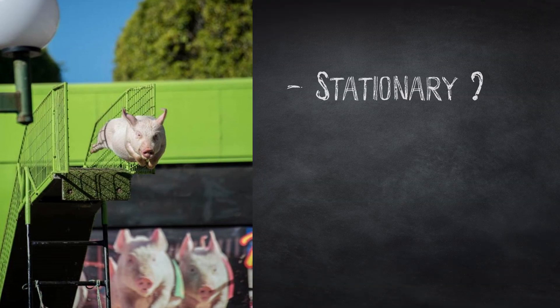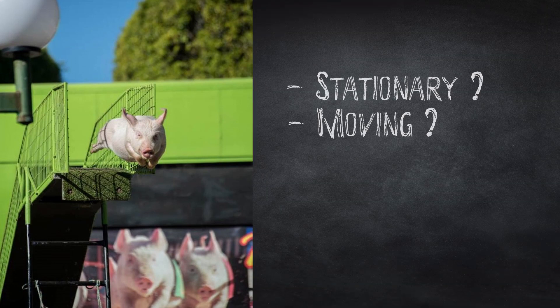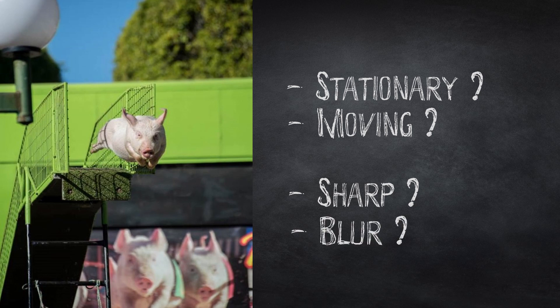So let's start with this image of a flying pig. Like any photo you need to ask yourself what is stationary, what is moving, what you want sharp and what you want blurry. In this example we have a flying pig so it will be moving fast. Since there is movement we have the option of freezing motion or blurring motion. In this case we want to freeze the motion so a fast shutter speed will be important.